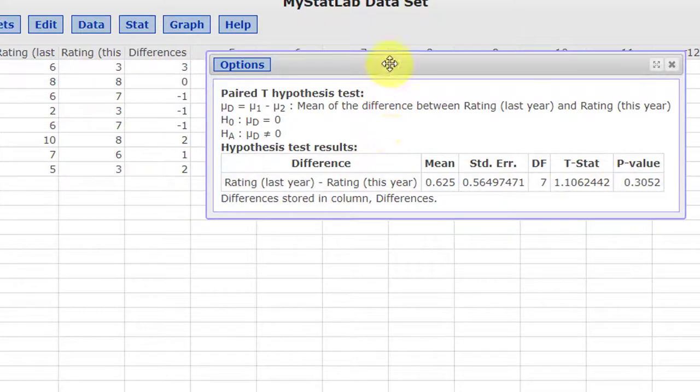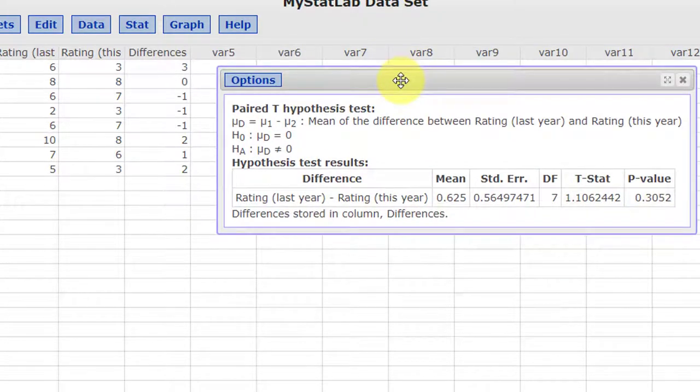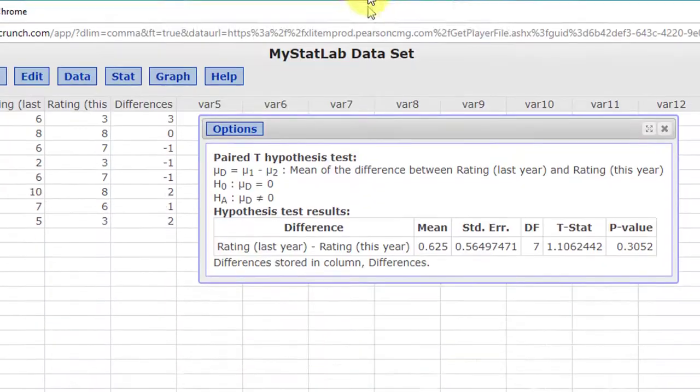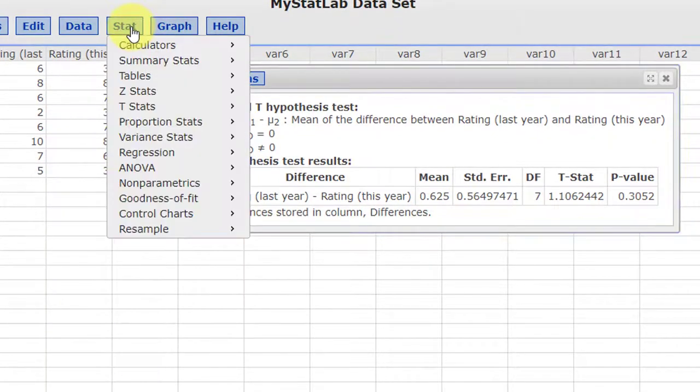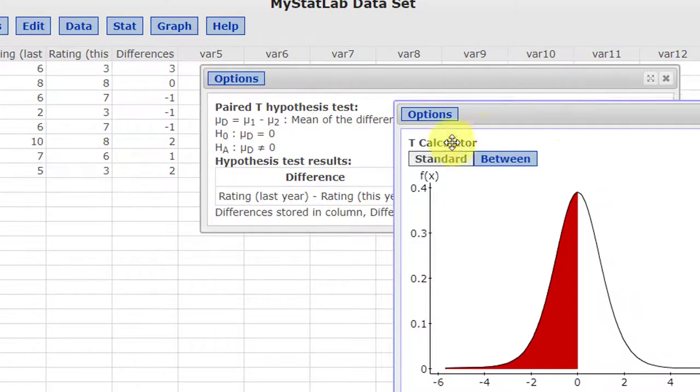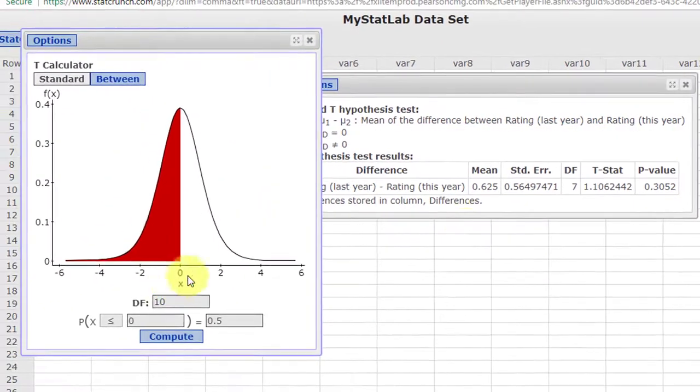But here we wanted to use the rejection area method. So we'll find the critical values here. Look down alpha is 0.05. So I'm going to go back to STAT, calculators, get my T, and we need to input the degrees of freedom, which it tells us right there, 7, which is just the number of pairs minus 1.